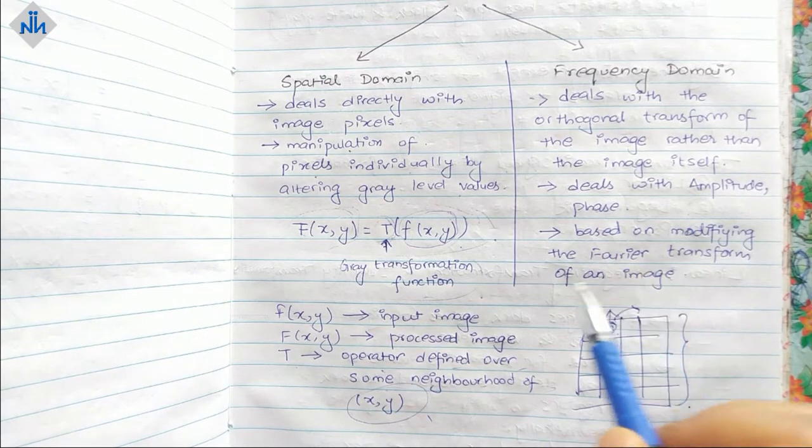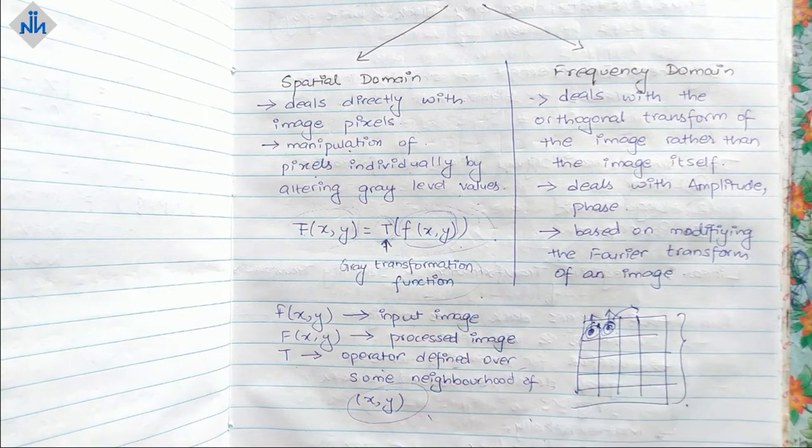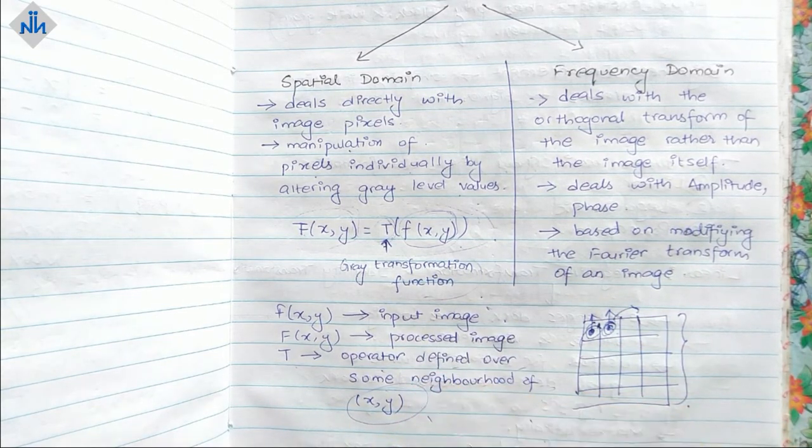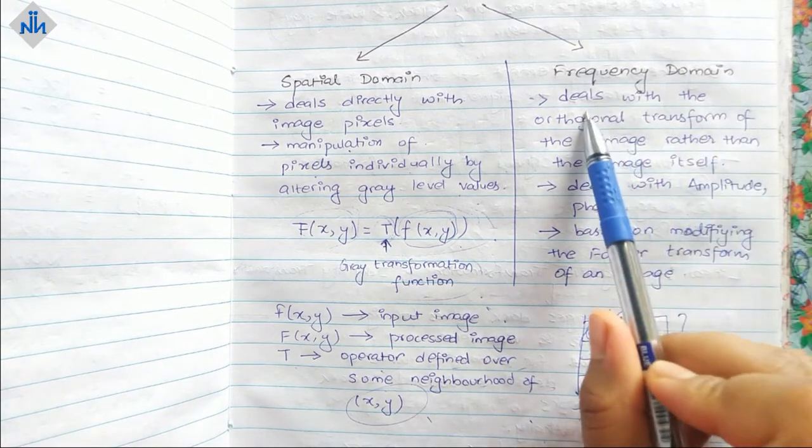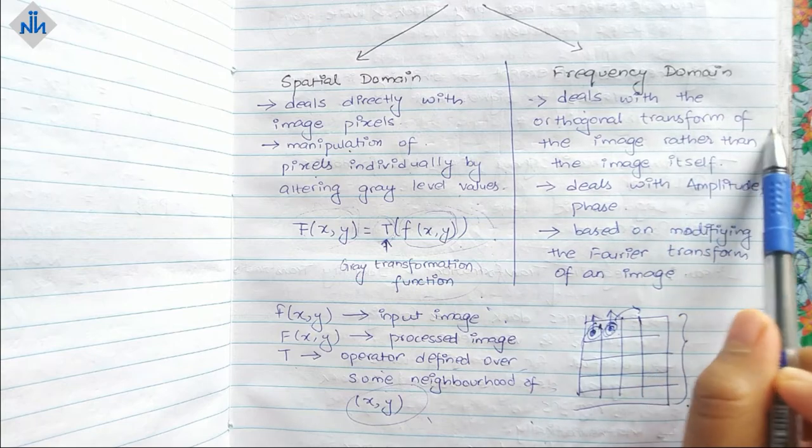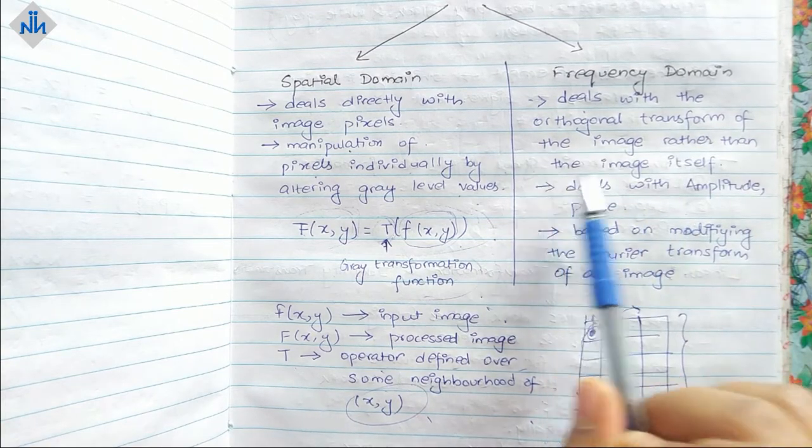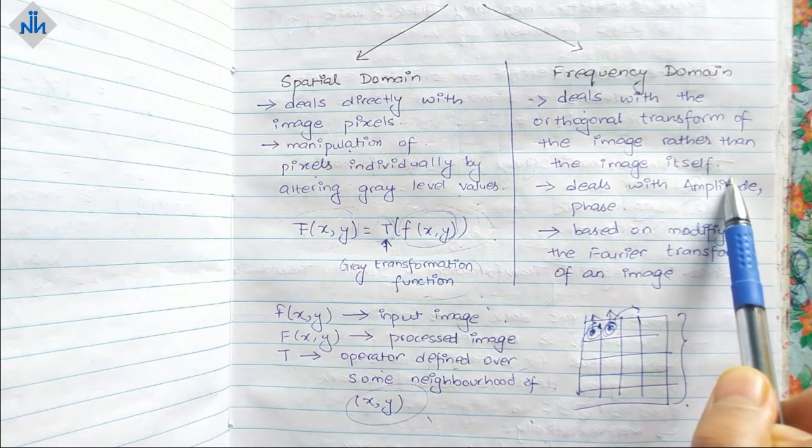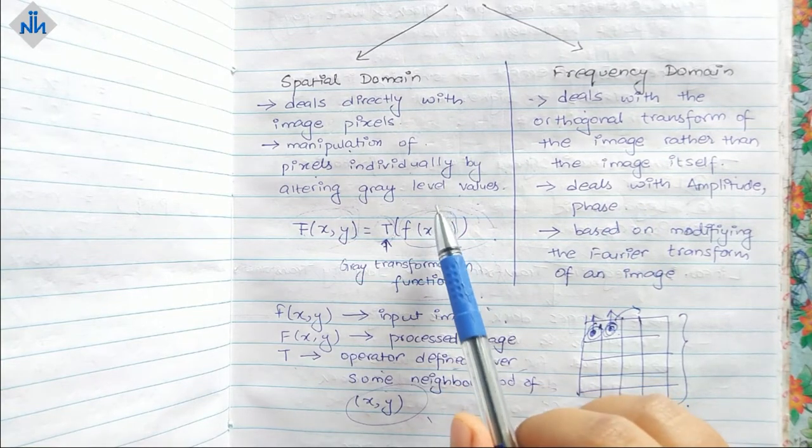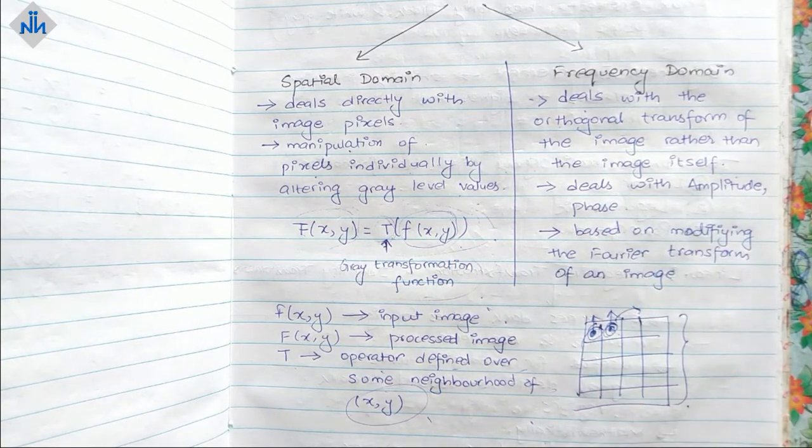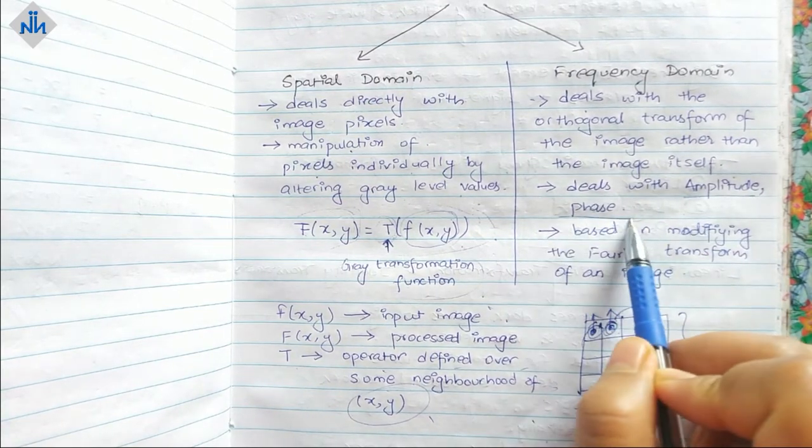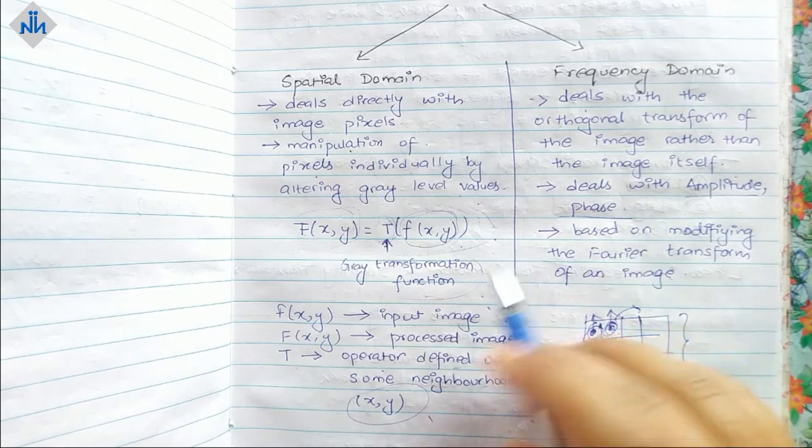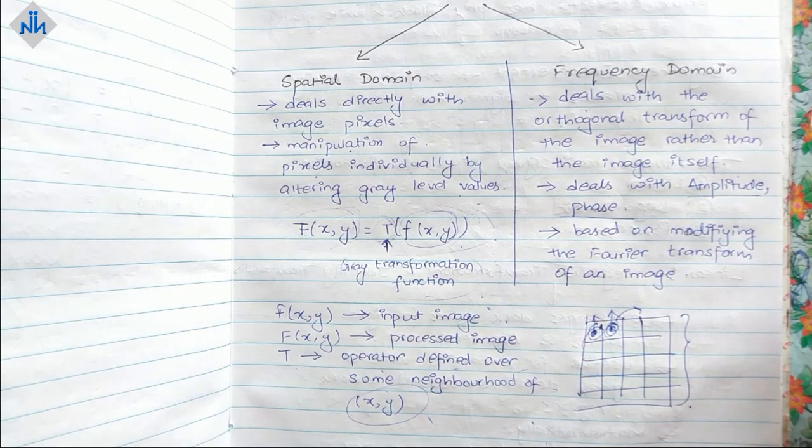This is all about spatial domain and we will discuss it further and how things happen in spatial domain too. Now frequency domain deals with the orthogonal transform of the image rather than the image itself. Here we were talking about pixels, but here we are going to talk about its orthogonal transform or basically we can say the amplitude and phase.